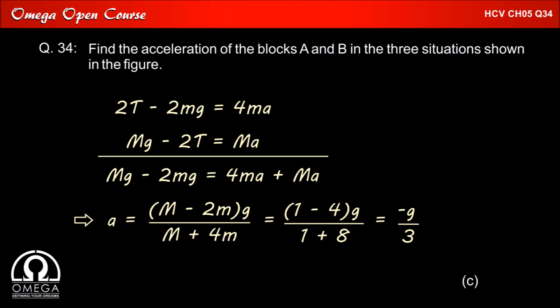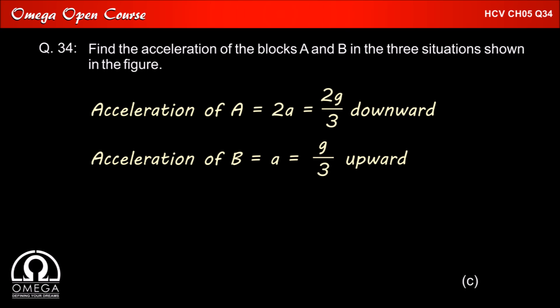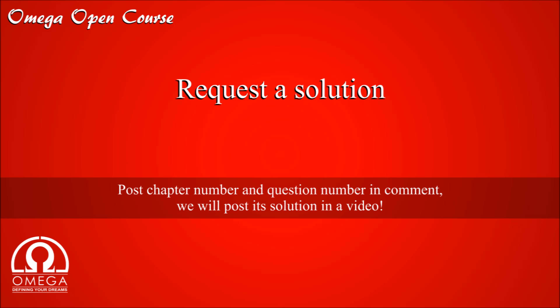The negative sign implies that the accelerations of the blocks are opposite to the directions assumed. Therefore, block A will move with acceleration 2G/3 in the downward direction and block B will move upwards with acceleration G/3.